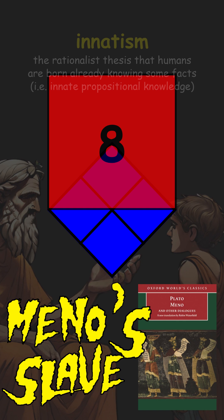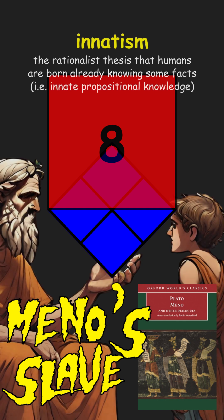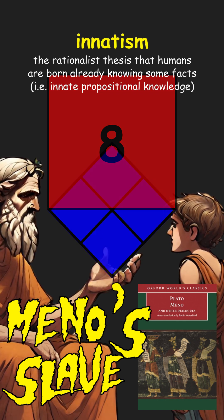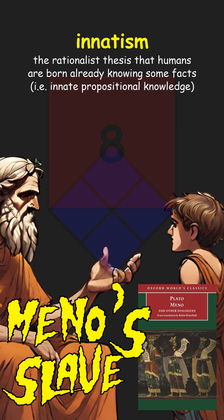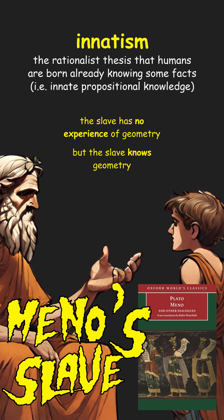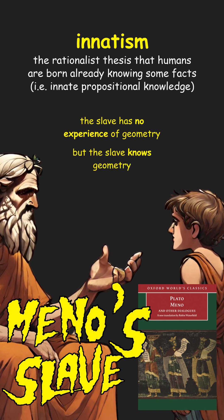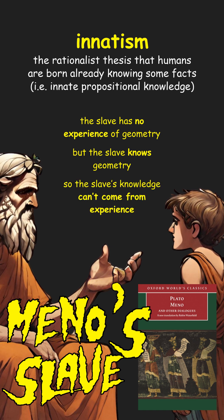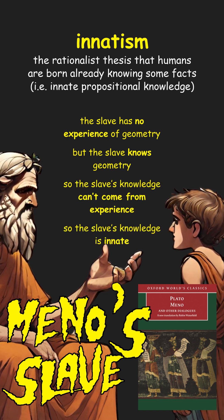This isn't a geometry lesson — it's philosophy. The philosophical point is that the slave has never been taught geometry and has no experience of geometry, and yet he seems to know this geometric proof, or at least can correct his mistakes when he makes them. So Plato takes this to show that the slave's knowledge of geometry must be innate.